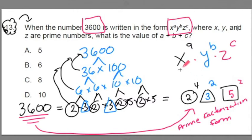Now I'm hoping you see that x, y, and z match up with the distinct prime numbers 2, 3, and 5. And that means that a, b, and c, the exponents, match up with 4, 2, and 2.